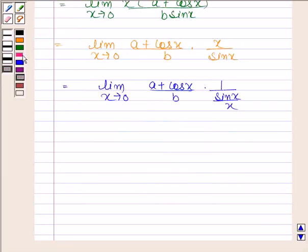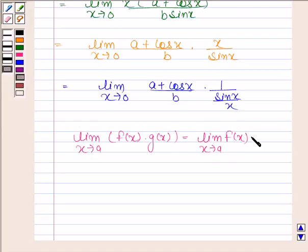You should know that limit of product of two functions, that is limit of f(x) into g(x) as x tends to a, is the product of limits of the functions. That is limit of f(x) as x tends to a into limit of g(x) as x tends to a.